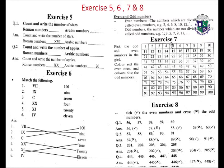Four even, five odd. Six even, seven odd. Eight even, nine odd. Ten even, eleven odd — one after one, even odd, even odd, even odd.